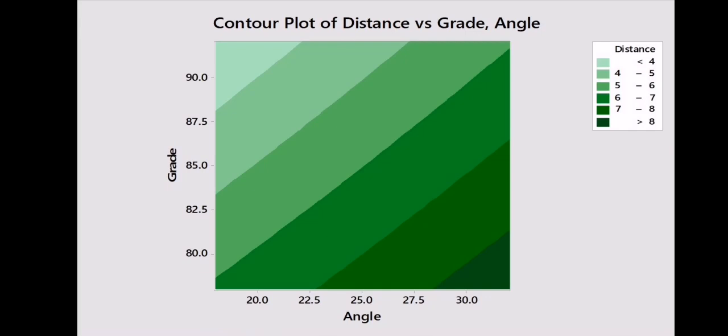The third thing we notice here is that the optimal settings for the factors are probably outside the range of levels that we have explored, because if we went further to the right with larger angles still and lower grade paper still, we might get even greater distances.